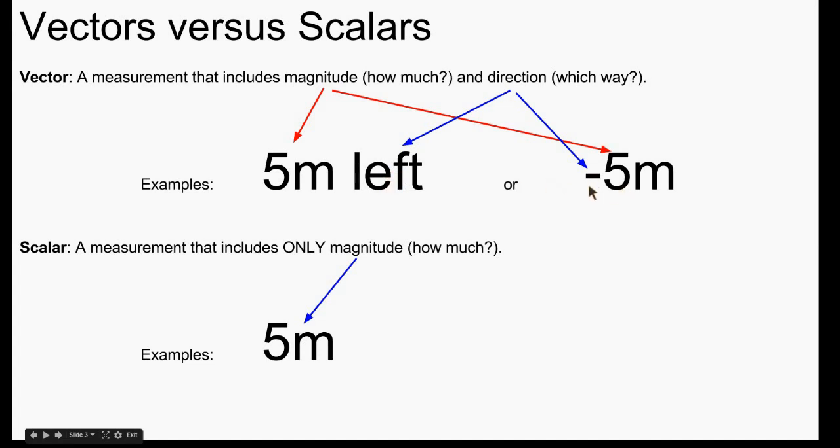Also, we can give a direction as a negative sign. If it's to the left, we would say it's negative. So 5 meters negative would mean 5 meters to the left.